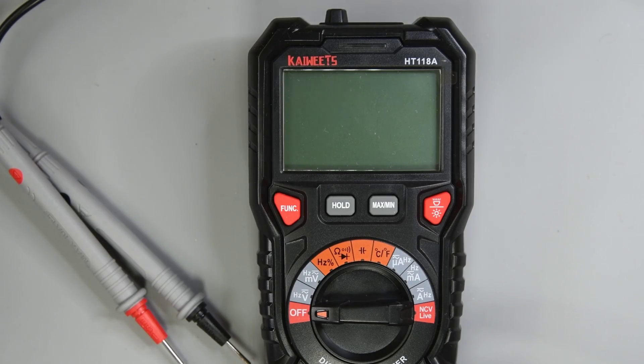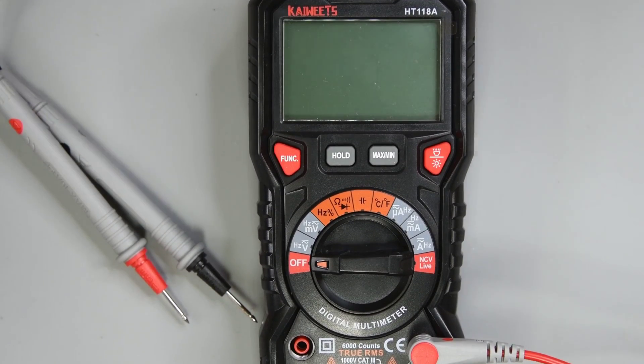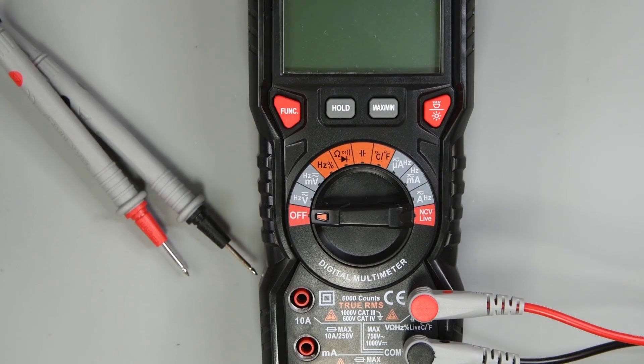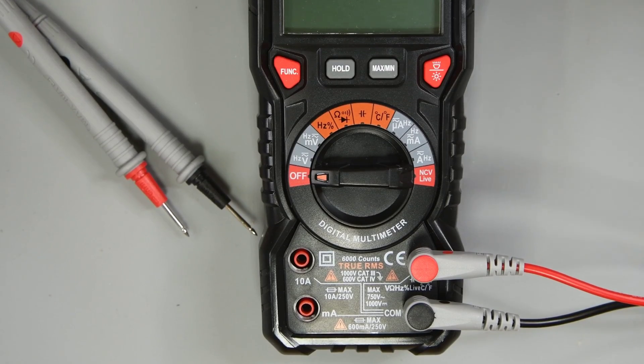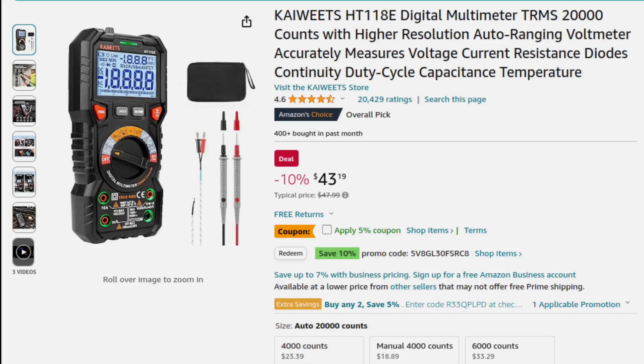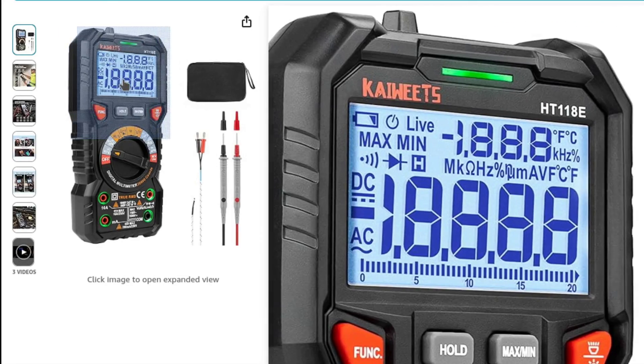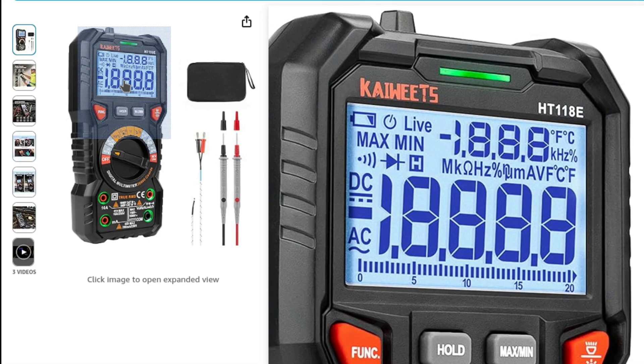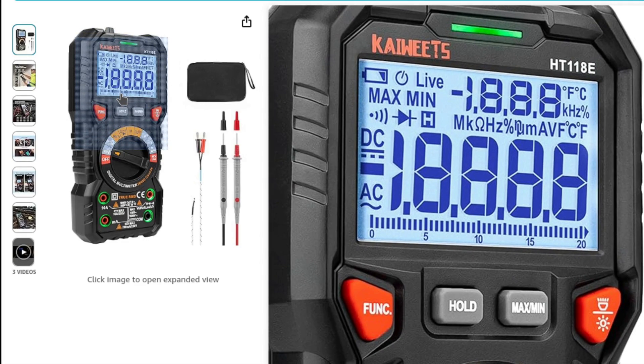I think this is a decent meter for the money. There were some 4,000 count meters about $10 less. I do feel the extra $10 is worth it for the 6,000 count. There is a 20,000 count version of this meter for about $10 more. It does offer a little bit more accuracy. But for this level of meter, for most uses, I don't see it being worth it.